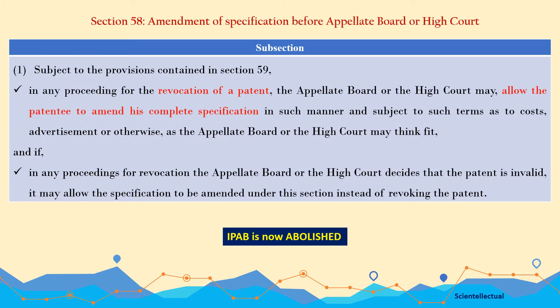Next, we come to Section 58: Amendment of Specification Before Appellate Board or High Court. Subsection 1: Subject to the provisions of Section 59, in any proceeding for the revocation of a patent, the Appellate Board or the High Court may allow the patentee to amend his complete specification in such manner and subject to such terms as to cost, advertisement, or otherwise as the Appellate Board or High Court thinks fit. And if in any proceedings for revocation the Appellate Board or High Court decides that the patent is invalid, it may allow the specification to be amended under this section instead of revoking the patent.